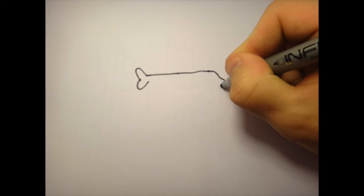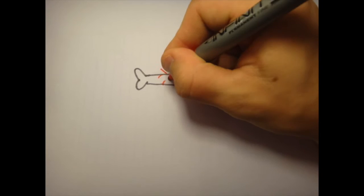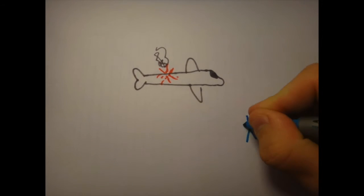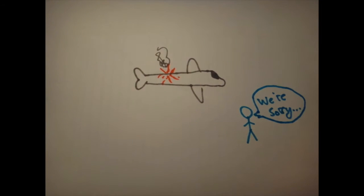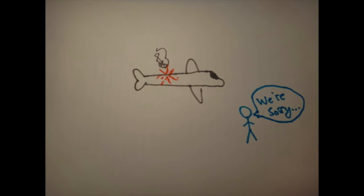In May of 1960, the Soviet Union shot down a U.S. spy plane and captured its pilot. President Eisenhower was forced to admit to the Soviets that the U.S. had been flying planes over their country for several years.